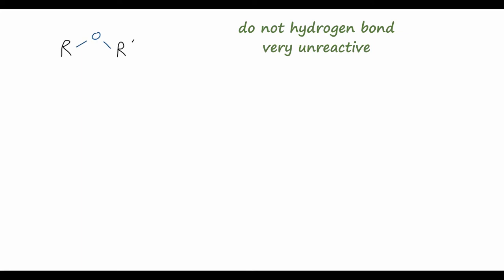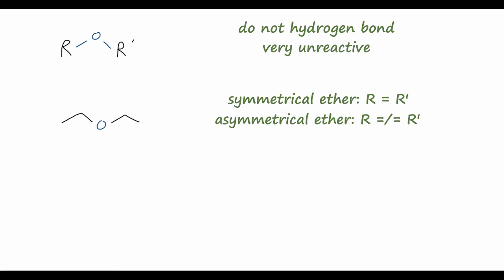A very common ether is diethyl ether, where we have an oxygen atom in the middle and two ethyl groups. Diethyl ether is a very common solvent in organic chemistry because it is unreactive and does not have any hydrogen bonds, making it very nice for reactions that are sensitive to protic solvents like alcohols or water. That is called a symmetrical ether where each alkyl group is the same; we also have asymmetrical ethers where they're different.